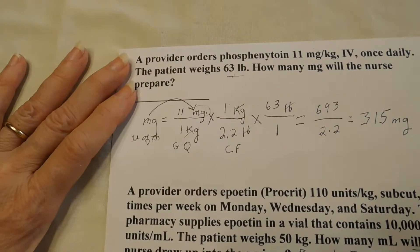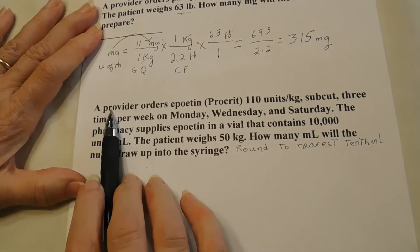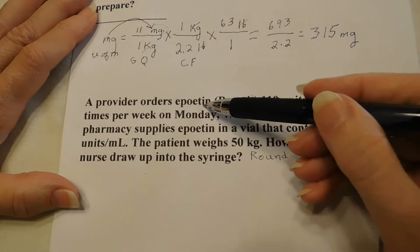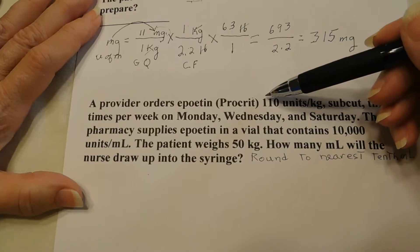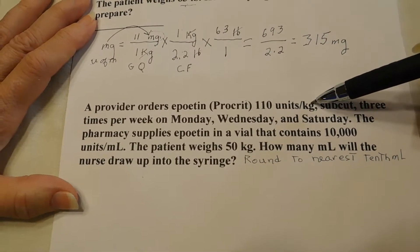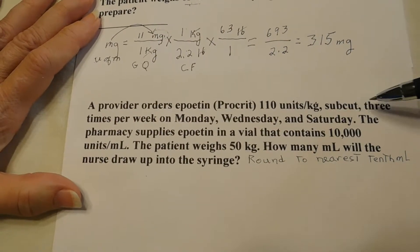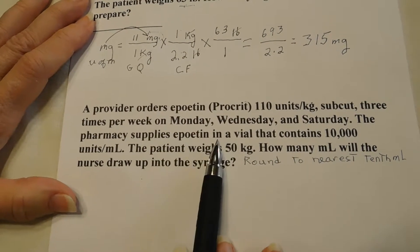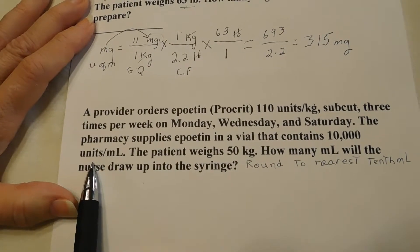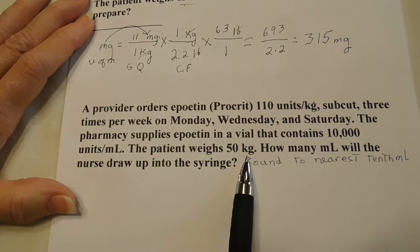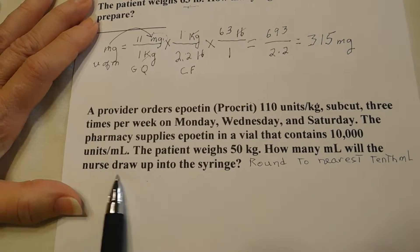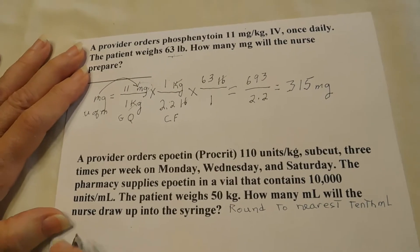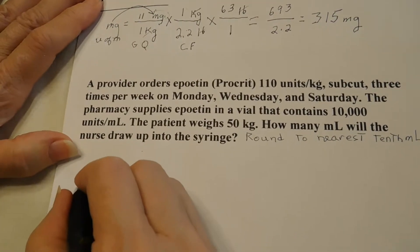Here we have epoetin — the provider has ordered epoetin, which is Procrit, the trade name. Epoetin is the generic name. The provider has ordered 110 units per kilogram, subcutaneous, three times a week: Monday, Wednesday, Saturday. The pharmacy supplies epoetin in a vial containing 10,000 units per milliliter. The patient weighs 50 kilograms. How many milliliters will the nurse draw up into the syringe, rounded to the nearest tenth? So our unit of measure will be milliliters.